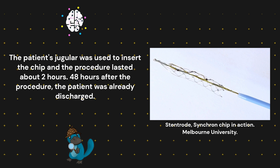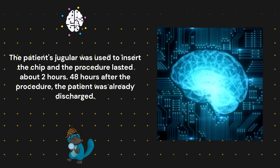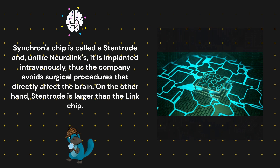The patient's jugular was used to insert the chip and the procedure lasted about two hours. 48 hours after the procedure, the patient was already discharged. Synchron's chip is called a stent road and, unlike Neuralink's, it is implanted intravenously, thus the company avoids surgical procedures that directly affect the brain.